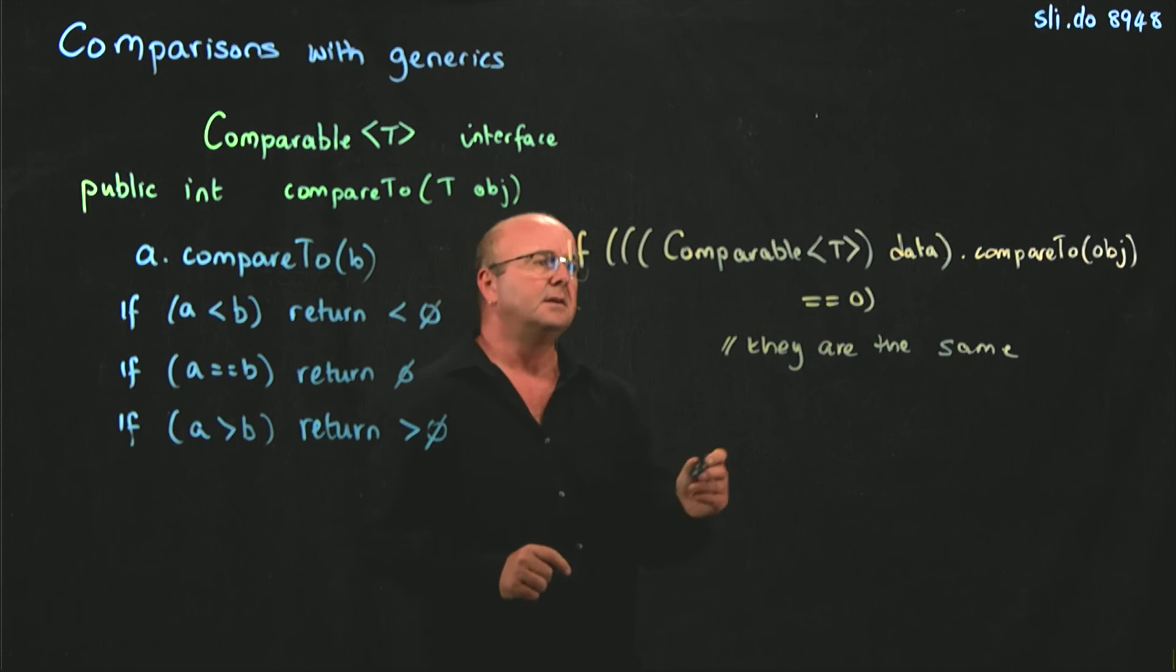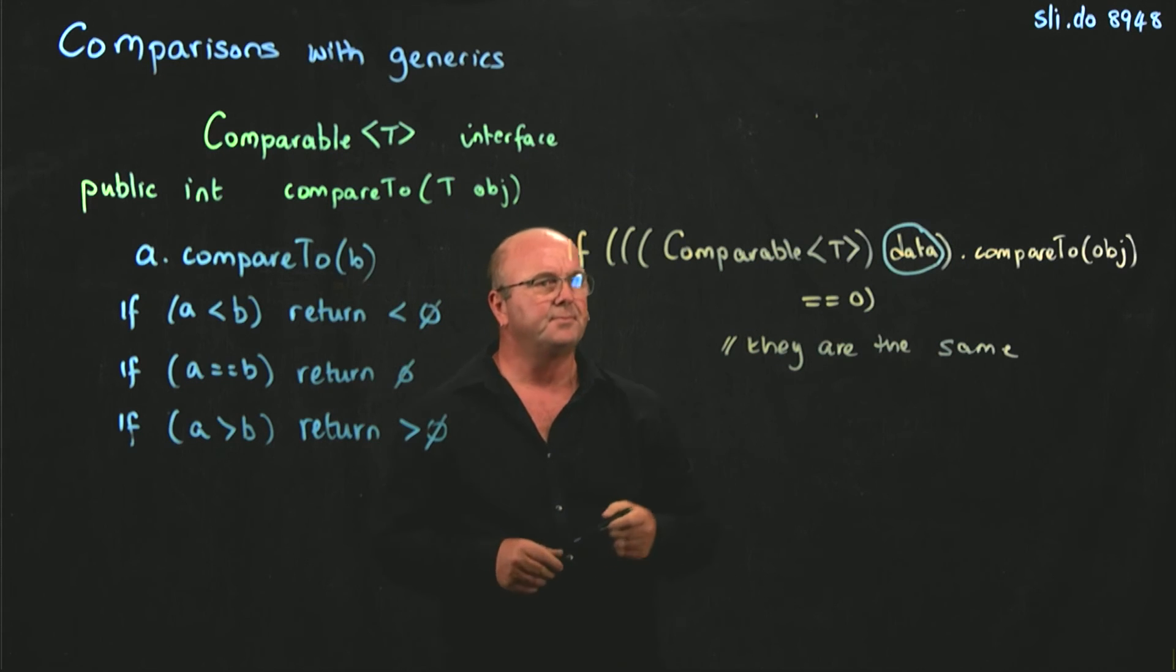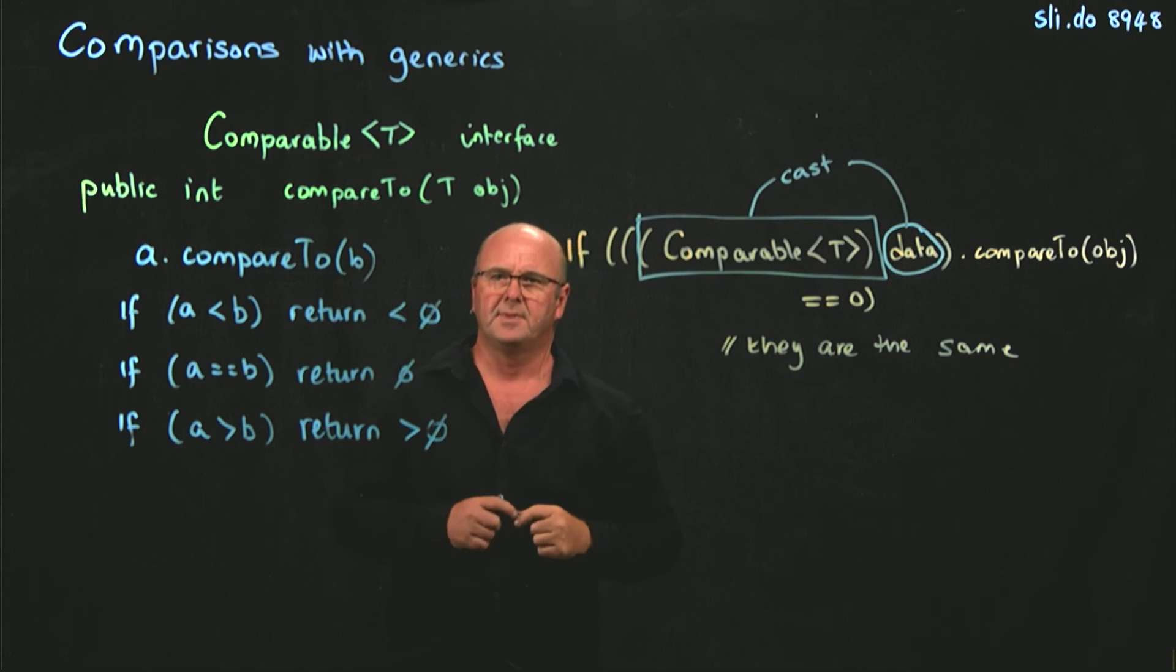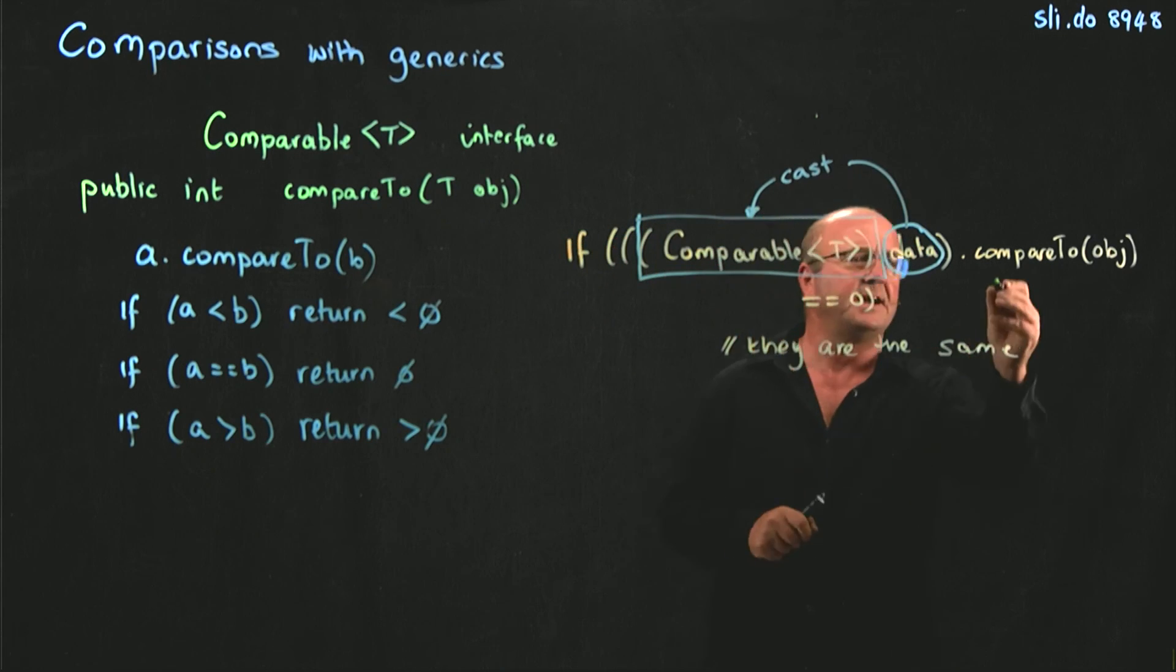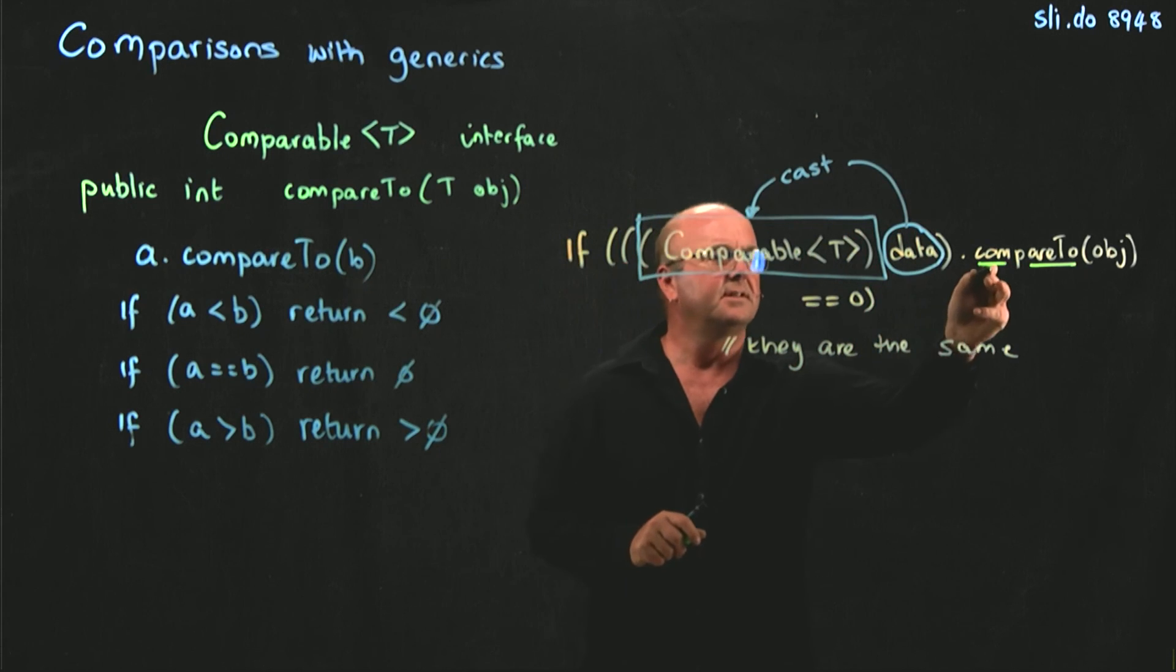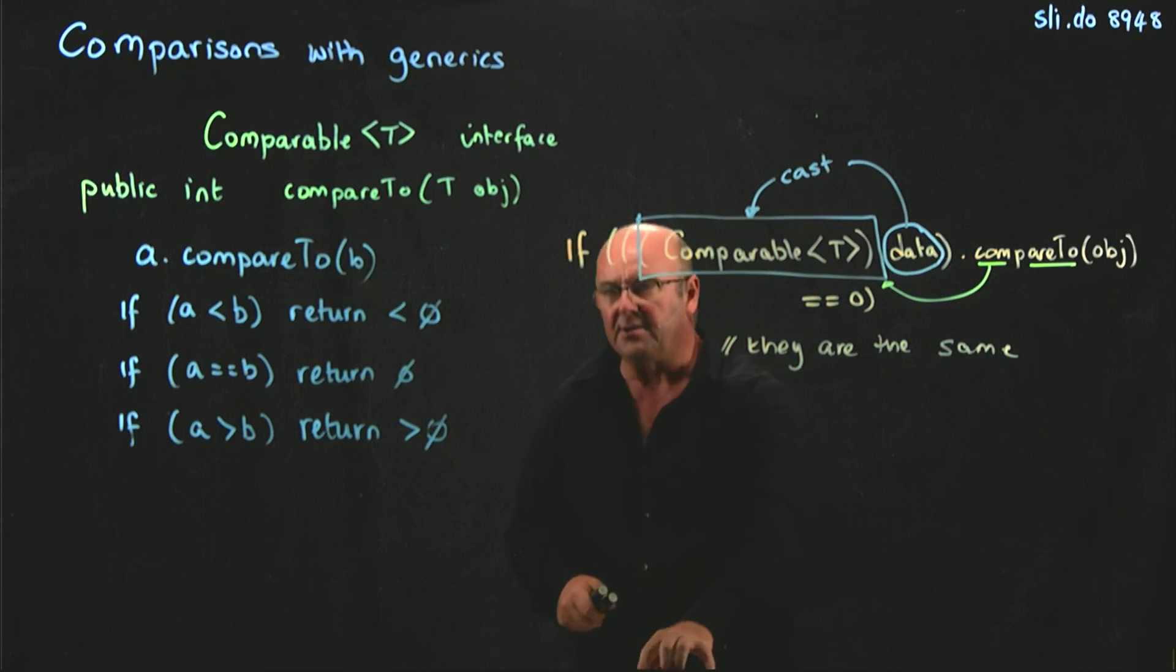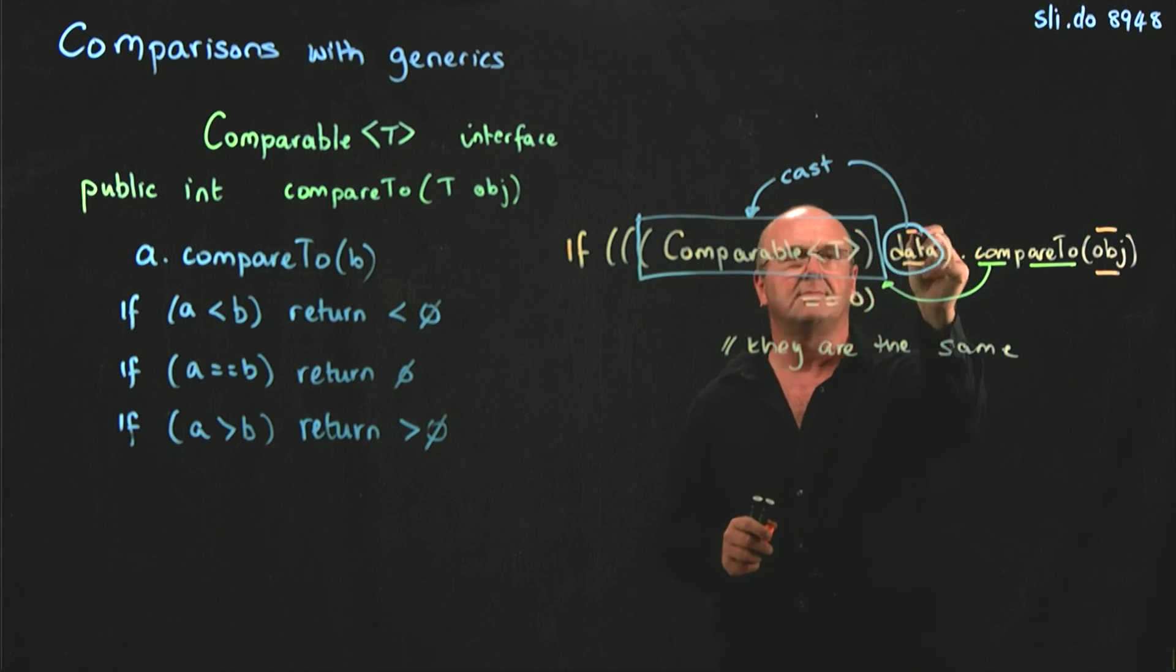So, what we're doing here is we're taking data, and we'll see on Tuesday where that data comes from. And we're casting it to comparable. So, this means that when we call the compareTo interface, sorry, the compareTo method, it is the compareTo method that relates to this comparable here. So, we take data, we cast it to comparable, we call the compareTo method, and we're calling that compareTo method, and we're providing it with another instance of something that's the same as data.